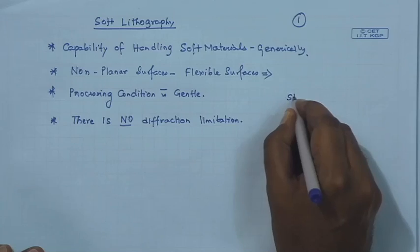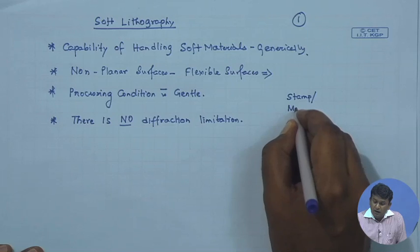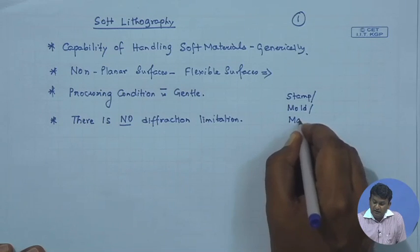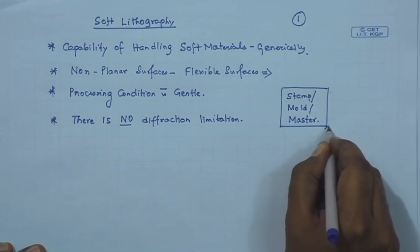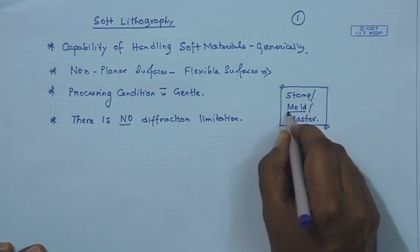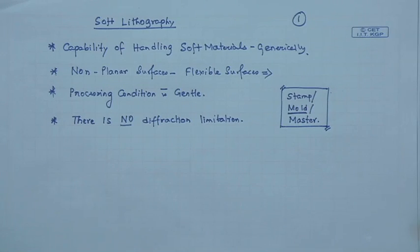These three words — stamp, mold, and master — are used interchangeably in the soft lithography literature, though specific techniques like nanoimprint lithography always refer to it as the mold. This is where the original pattern is engraved, and soft lithography is like a very rapid xerox machine that goes on producing replicas of that structure. In principle, photolithography does the same thing, but it is much more cumbersome and uses the photosensitive property of the photoresist.